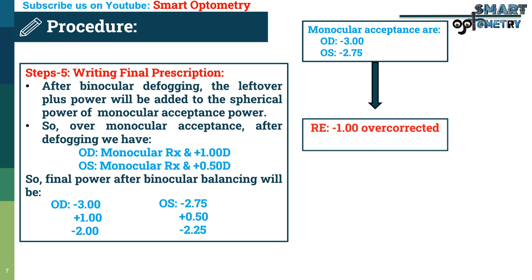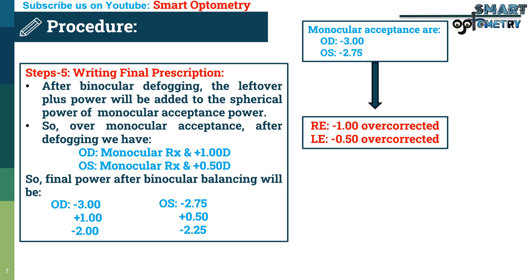So in the right eye there was an over-correction of minus 1, and in the left eye an over-correction of minus 0.50 dioptre. When we over-correct a myopic patient, rays focus behind the retina, and when the patient views an object, accommodation is stimulated to bring the rays back onto the retina, causing extra accommodative effort. This leads to asthenopic symptoms, which is why binocular balancing is very important during refraction.